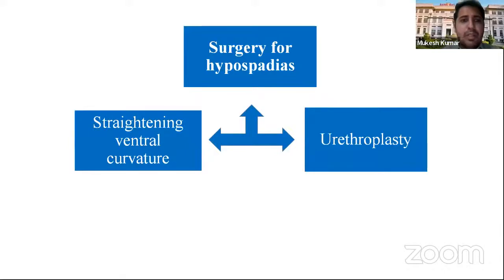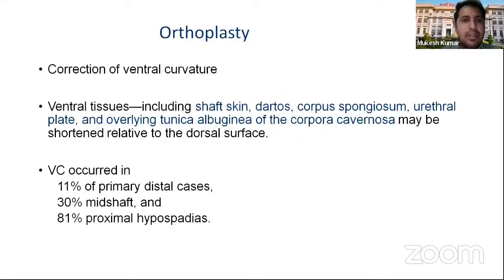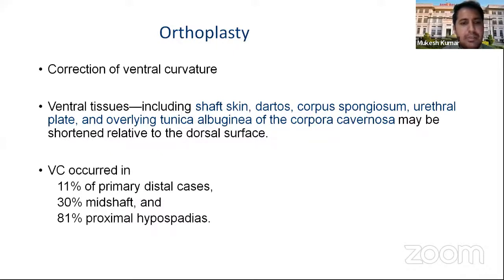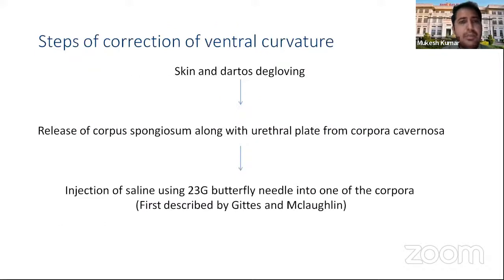Surgery for hypospadias is divided into two parts: straightening of the ventral curvature and urethroplasty. Causes of ventral curvature include shortening of soft skin, dartos, corpus spongiosum, urethral plate, and overlying tunica albuginea of the corpus cavernosa relative to the dorsal surface, also known as ventral corporeal disproportion. Ventral curvature occurs in 11% of primary distal cases, 30% of mid-shaft, and 81% of proximal hypospadias cases. Steps include skin and dartos degloving, release of corpus spongiosum along with the urethral plate, and then performing the artificial erection test.